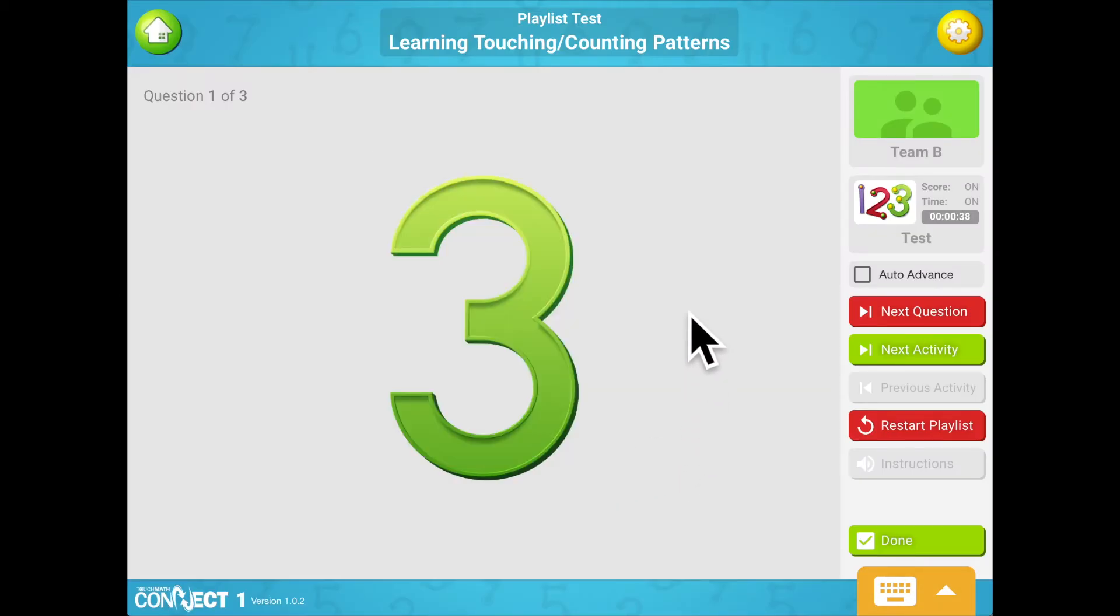There are three touch points on the numeral 3. The 3 is touched at the beginning, middle, and end of the numeral while counting: 1, 2, 3. Touch and count the touch points on the numeral in the correct order. Click on the Done button when you are finished. 1, 2, 3. Rock on!